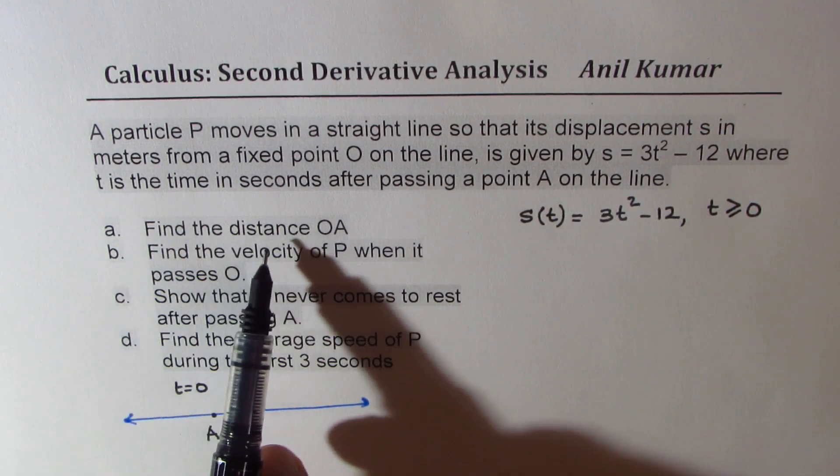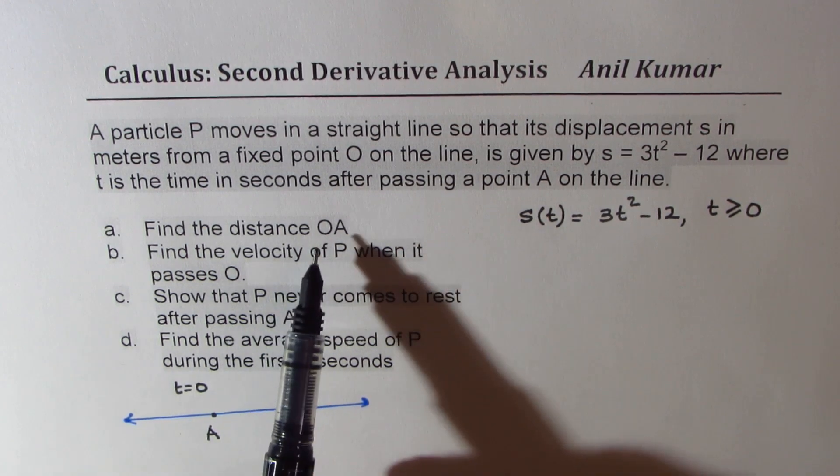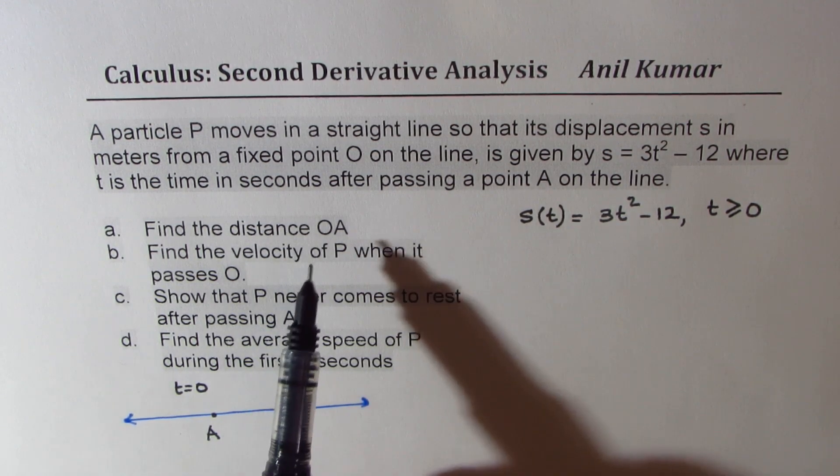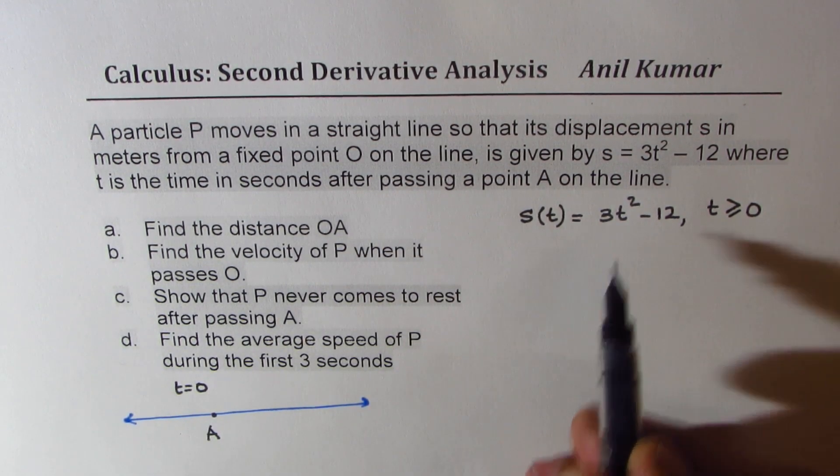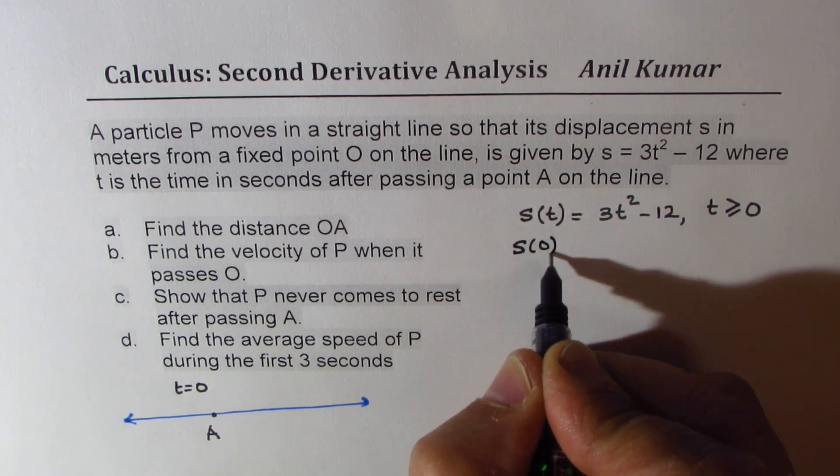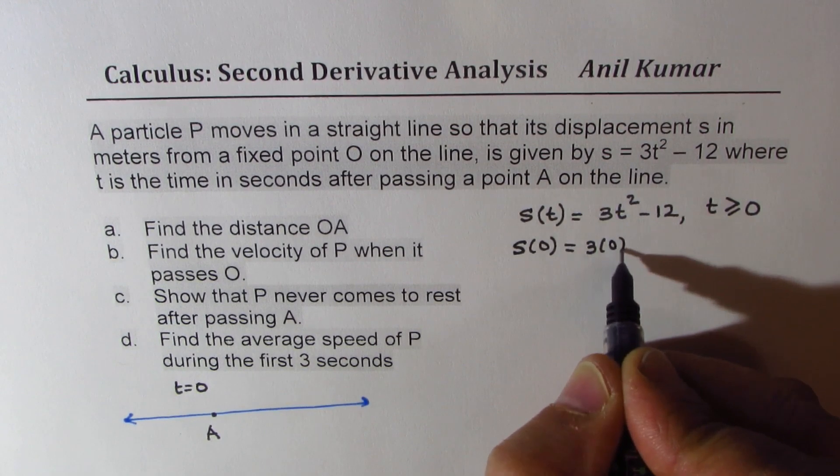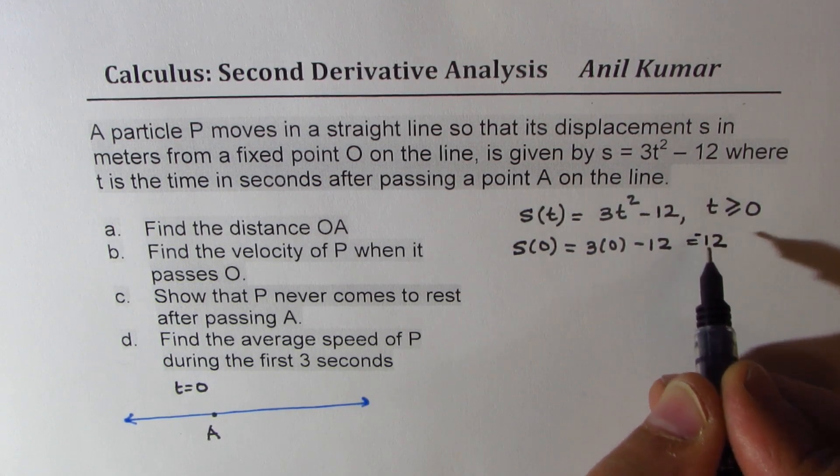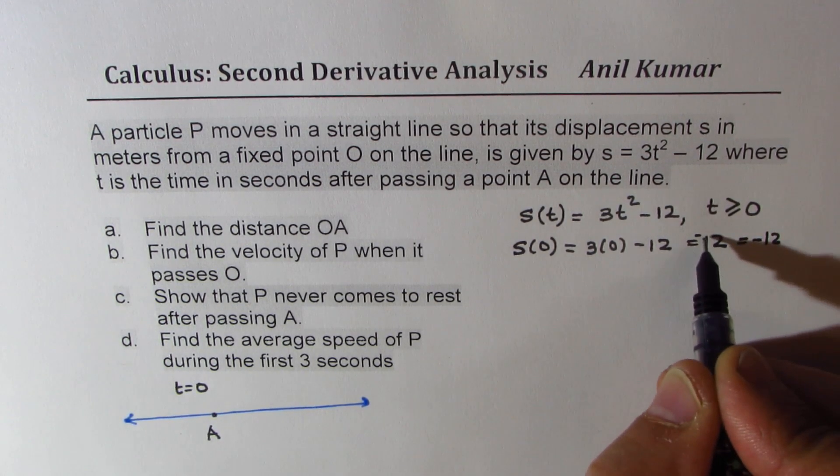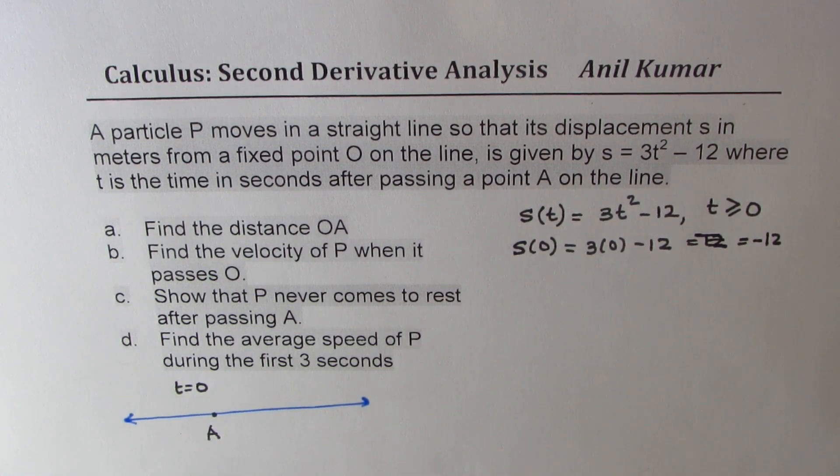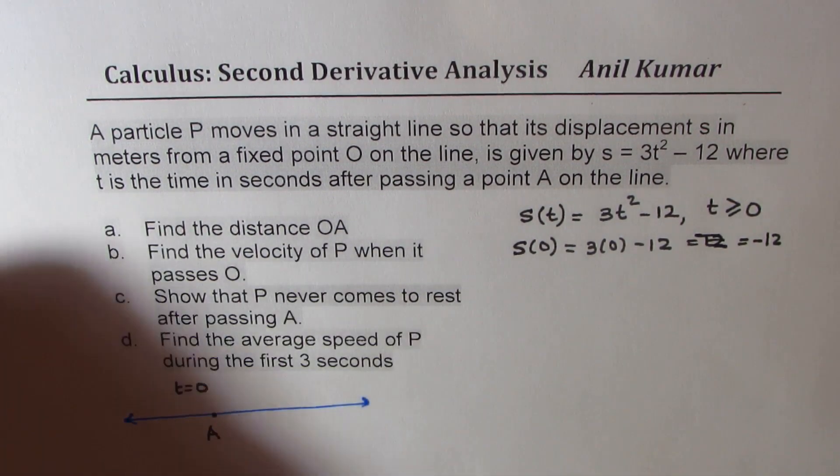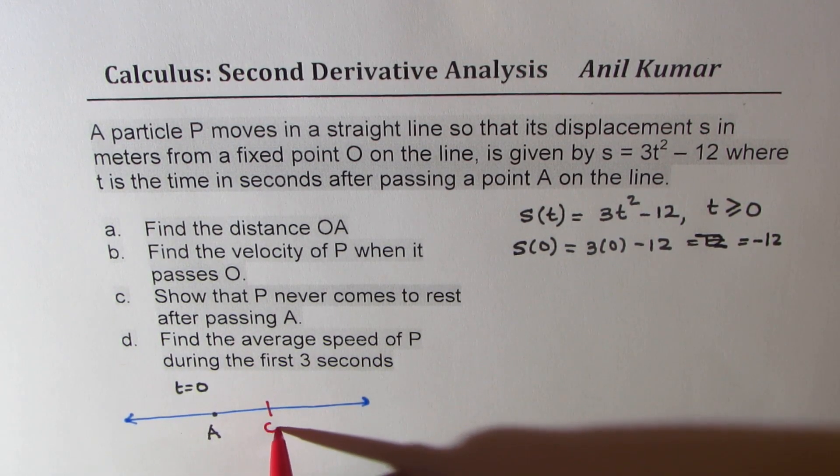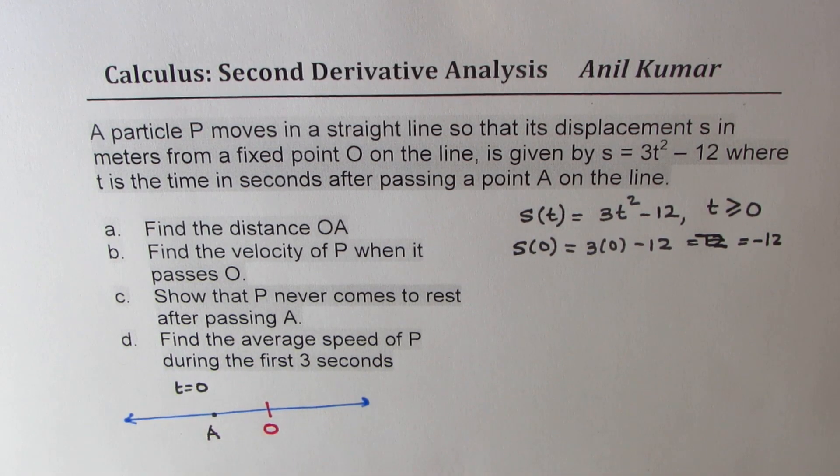First part here is find the distance OA. So from some fixed point origin O to this point A. But we know at A, t is 0. So if I substitute 0 here, what do I get? I get 3 times 0 minus 12. So I get 12 with a negative sign. Let me write here as minus 12 and the units are meters. So that means the point A is really towards left of the origin. So let me mark the point O here now since we know that this is to the left of origin.